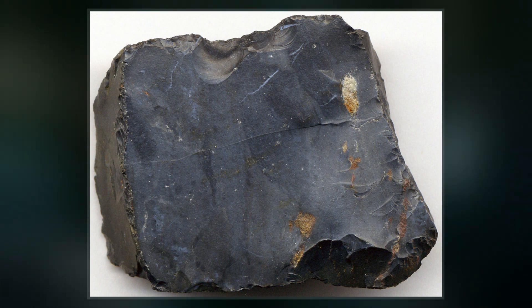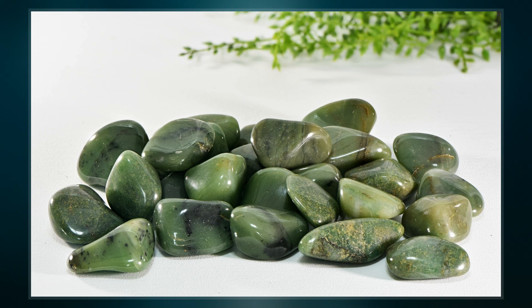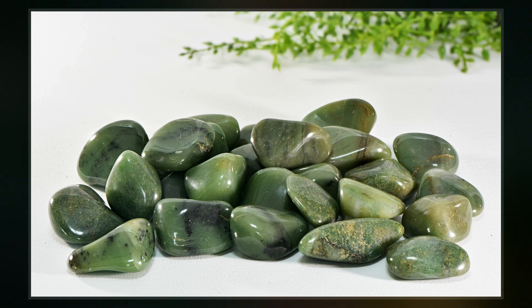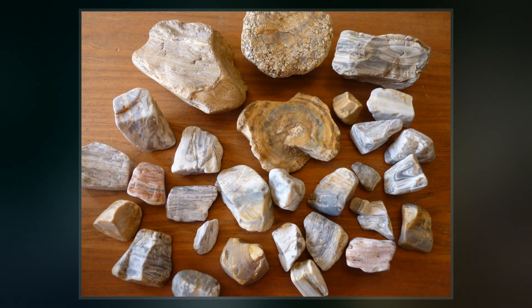Chert varies greatly in color, but most often manifests as gray, brown, grayish-brown and light-green to rusty red. Its color is an expression of trace elements present in the rock, and both red and green are most often related to traces of iron.